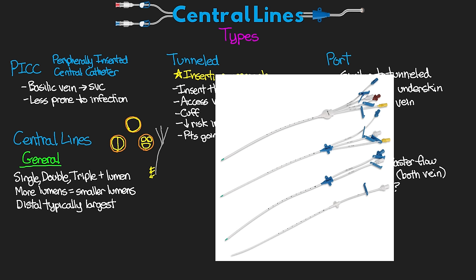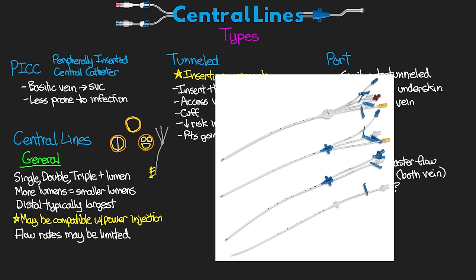On our triple lumen, the distal lumen — the one that comes out the very end — is typically the largest port. Some of these catheters may be compatible with high-power injection for CT with contrast. It's important to know that especially with triple lumen catheters, flow rates are often minimal and not effective for large-volume resuscitation. This varies based on the number of lumens and the size of the catheter. If you look on the tubing for each lumen, it lists the size in French, which you can look up to determine your maximum flow rate.